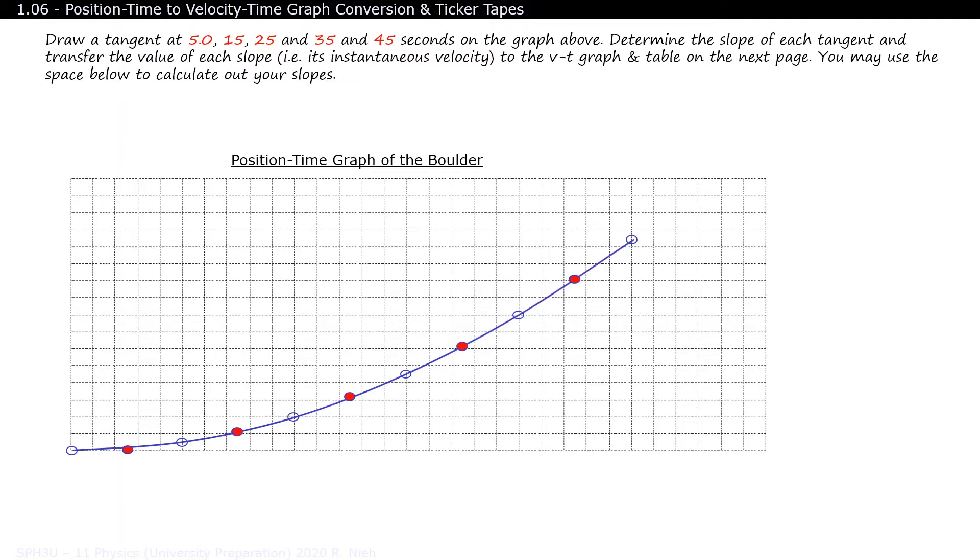Also use clean scale increments such as 1, 5, 10, 50, or 100. Weird increments like 3 or 7 make it very difficult to read the data off the graph.